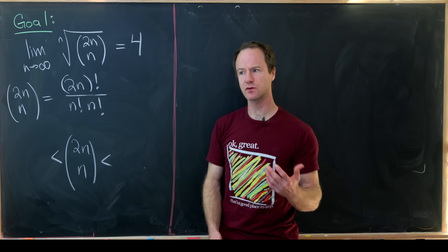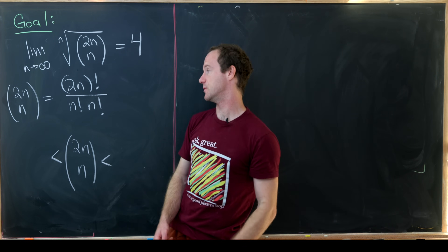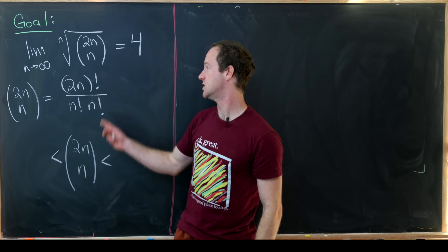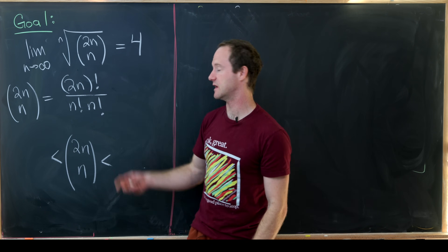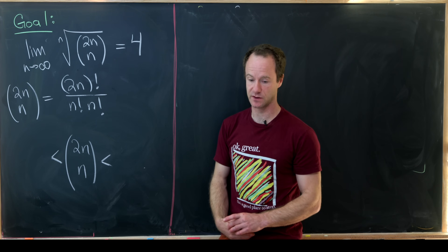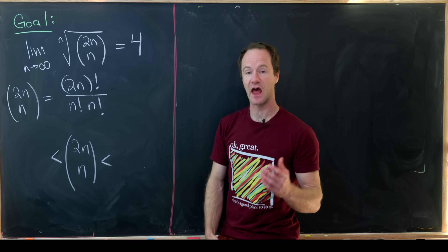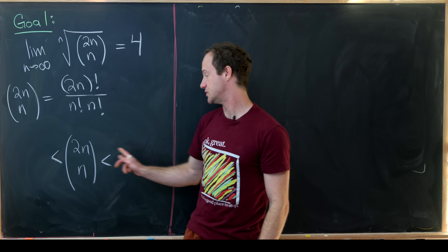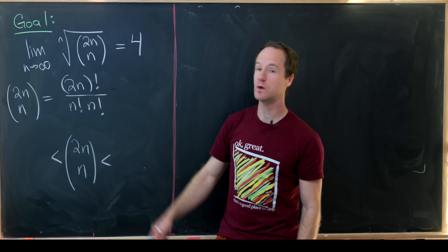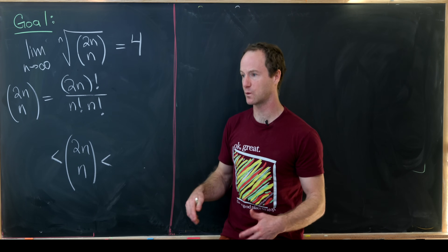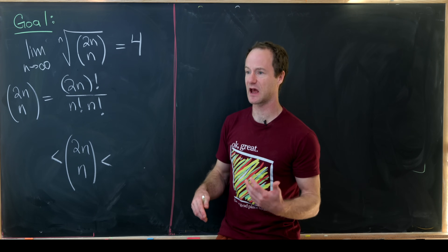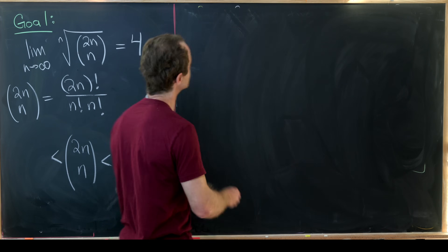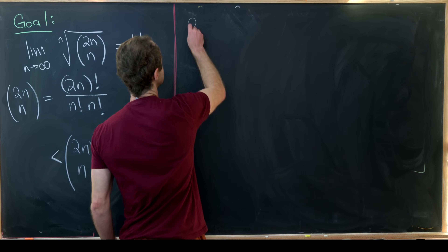Let's recall that by the definition of binomial coefficients, 2n choose n is 2n factorial over n factorial times n factorial. Our approach here will be to bound 2n choose n between two sequences for which we can calculate their limits a little bit more simply. So let's get started.